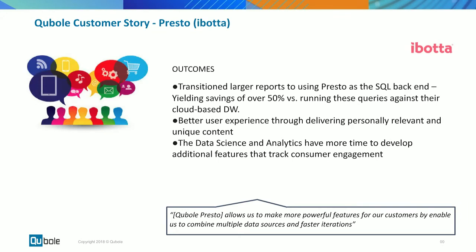Let me share a specific customer story. We have a user story from Iboda, where they've achieved total cost of ownership savings of over 50% because of the queries they run against different cloud-based data warehouses they've built. These TCO benefits come from the different user experiences being delivered because of different personas needing different platforms. The data science and analyst teams can easily onboard on a single platform — Cubo — and query data from the data lake built on the cloud. Iboda has clearly achieved victory on TCO using Cubo and Presto.